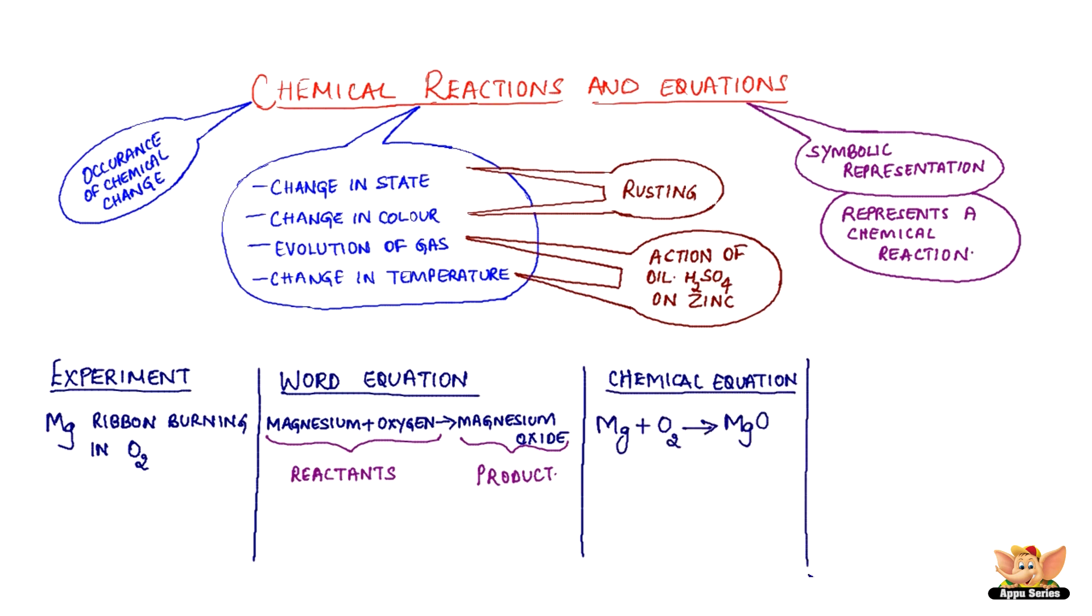A complete chemical equation represents the reactants, products, and their physical states symbolically. Here, magnesium is solid, represented as S within brackets. Oxygen is gas, represented as G within brackets. And the product magnesium oxide is solid, again represented as S within brackets. We will learn more about state representation later.